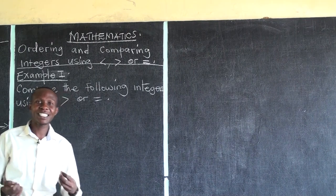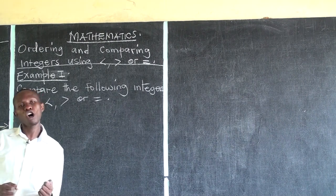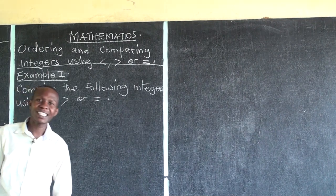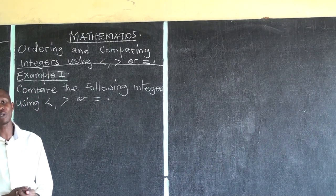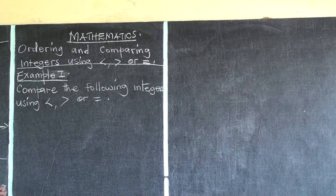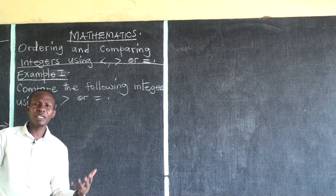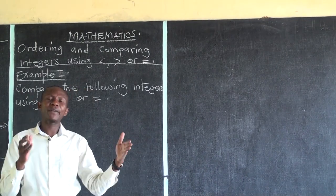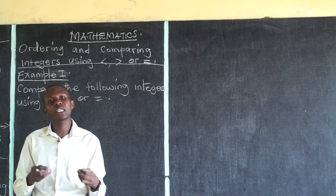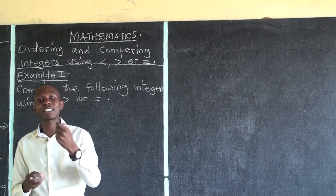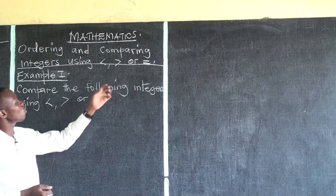Today we are going to look at ordering and comparing integers using less than, greater than, or equal to. When we talk about ordering, we mean arranging — from the smallest to the biggest. In most cases we have ascending and descending orders.